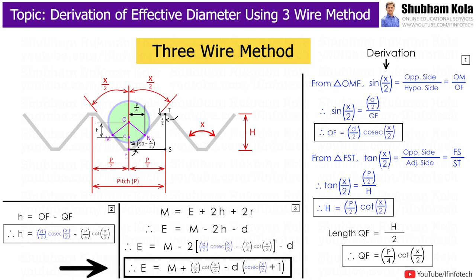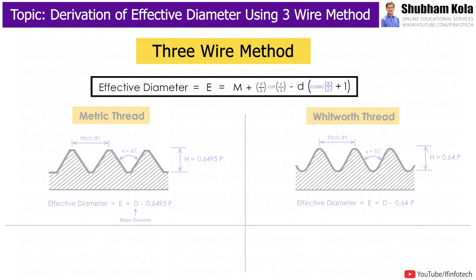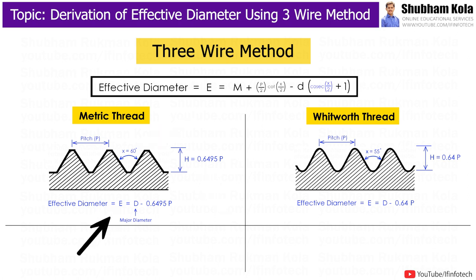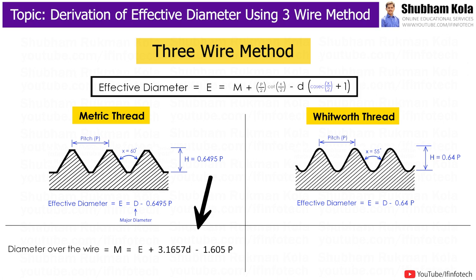The standard nomenclature for metric thread is: depth of thread H = 0.6495P, and thread angle x = 60 degrees. The effective diameter for metric thread is major diameter D minus 0.6495 × pitch. Substituting all these values and simplifying, we get the equation for capital M, that is the diameter over the wire.